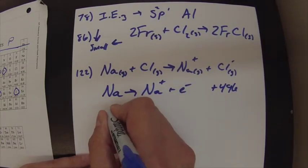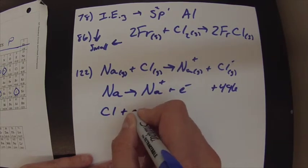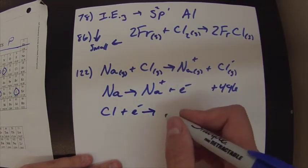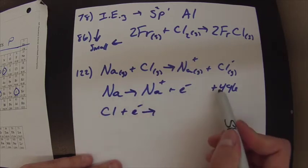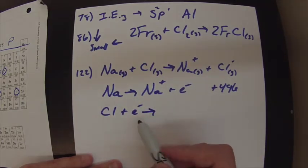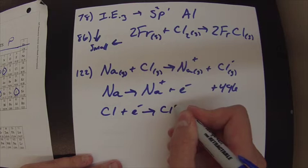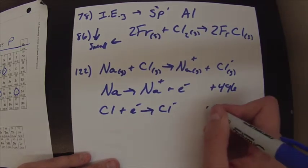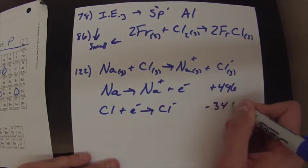And then chlorine, accepting an electron. Now, we would look at an ionization energy chart for this, we would look at an electron affinity chart for this. Has a negative 349.